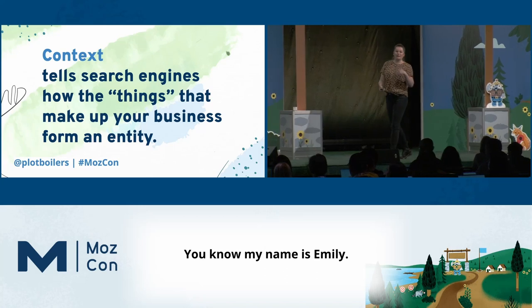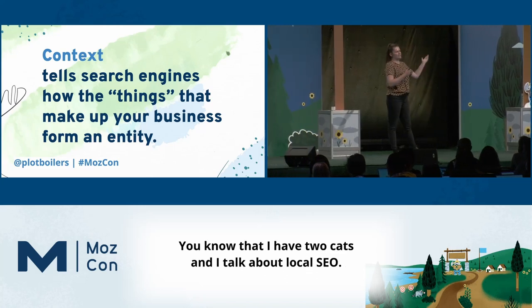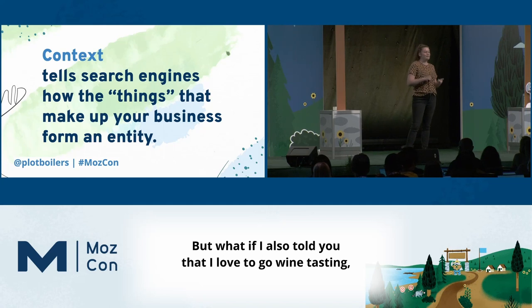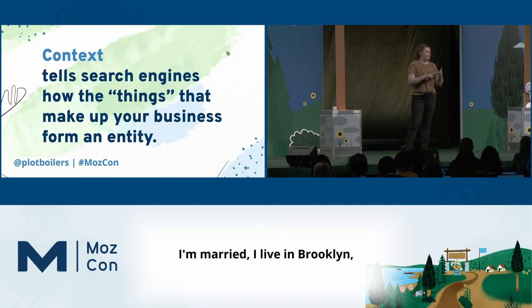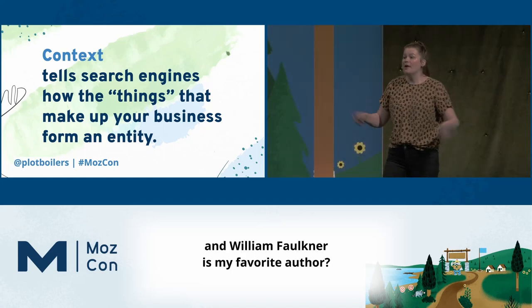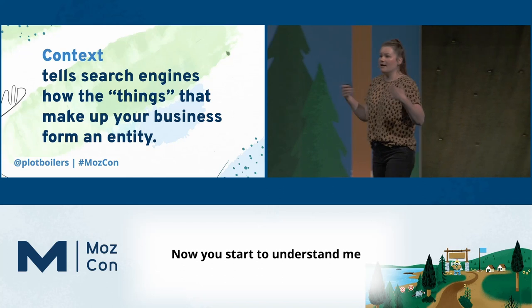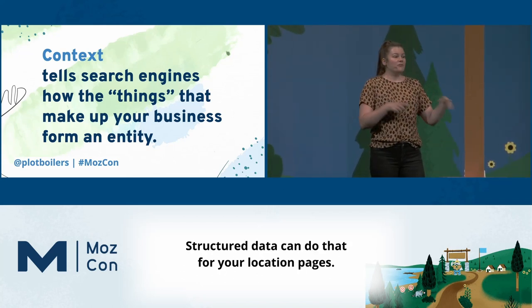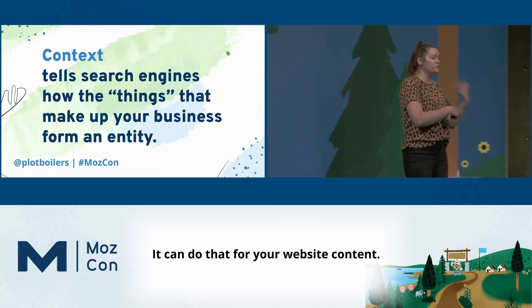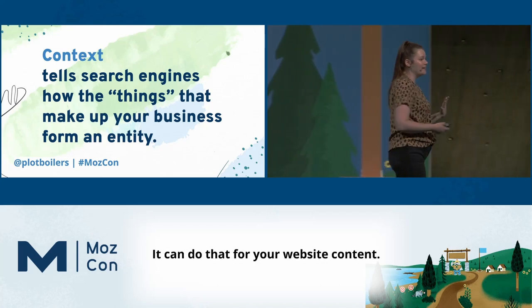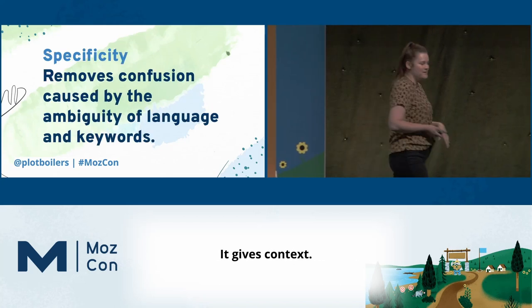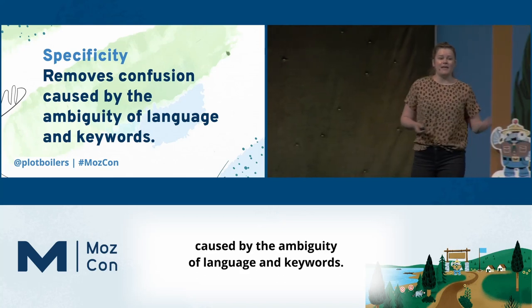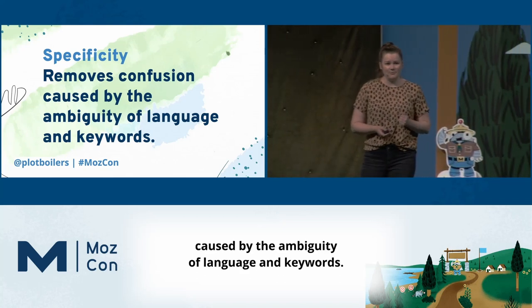Think about it like this: my name is Emily, you know I have two cats and talk about local SEO. But what if I also told you I love wine tasting, I'm married, I live in Brooklyn, and William Faulkner is my favorite author? Now you start to understand me more as an entity. Structured data can do that for your location pages and your website content — it gives context. It also provides specificity — it removes the confusion caused by the ambiguity of language and keywords.